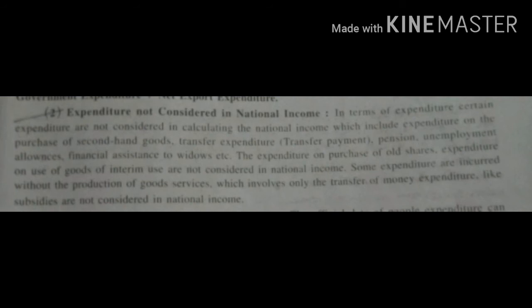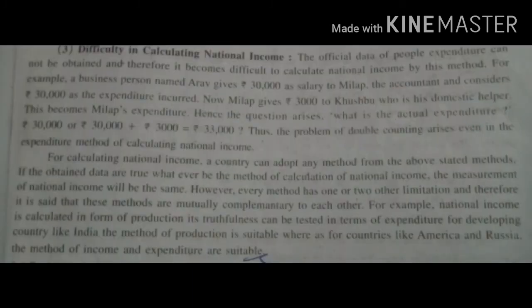Expenditure not considered in national income includes: expenditure done on purchasing second-hand goods, transfer expenditure such as pension, unemployment allowance, and financial assistance to widows, expenditure on purchase of old shares, and expenditure on goods of interim use. Some expenditure involves only a transfer of monetary value and no production of goods and services, so it is not considered — for example, subsidies.